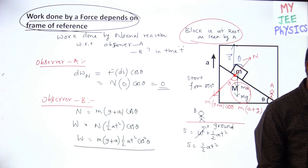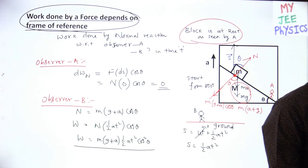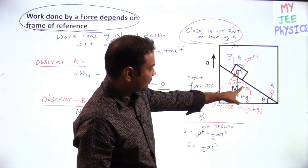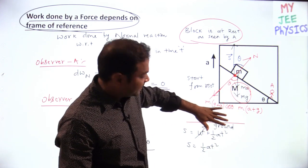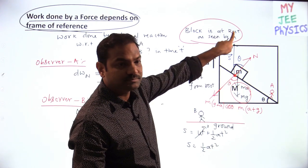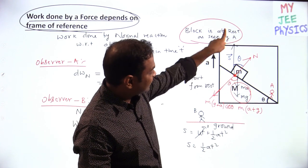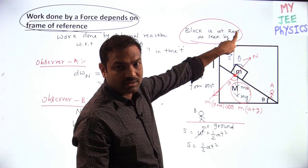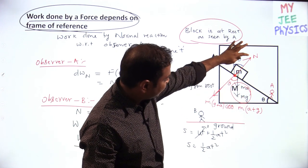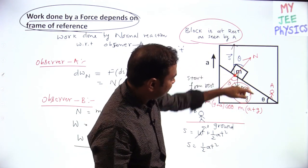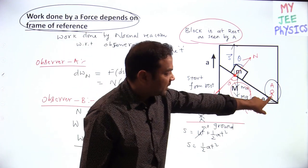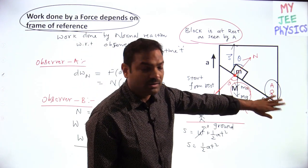A student asks: why do we consider the pseudo force when the ground frame is inertial? The answer: the normal reaction was solved with respect to observer A, who is in a non-inertial frame. As seen by A, the block is at rest. Since A is in a non-inertial (accelerating) frame, I have to apply the pseudo force MA downward. Then I balance the forces, getting N = M(g + a)cos θ.